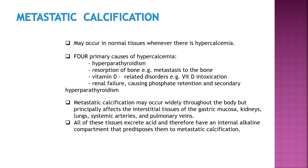Metastatic calcification may occur in normal tissues whenever there is hypercalcemia. The four primary causes of hypercalcemia are: hyperparathyroidism with excess parathyroid hormone; resorption of bone, for example from metastasis of cancer to the bone; vitamin D-related disorders such as vitamin D intoxication; and renal failure causing phosphate retention and secondary hyperparathyroidism.